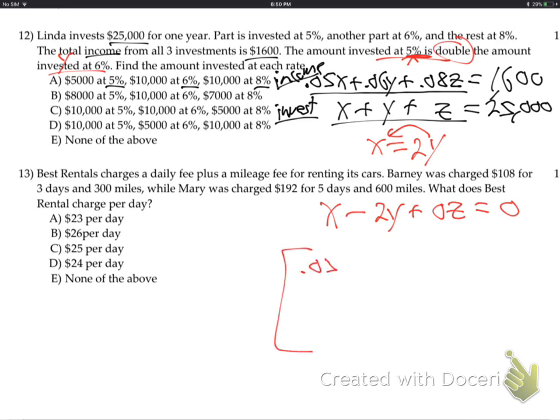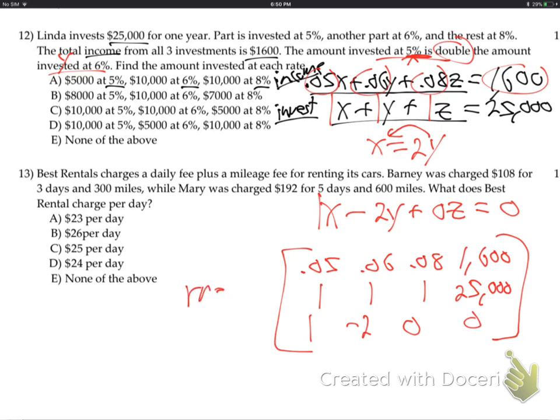So there's my matrix. So here we go, 0.05 right here, 0.06, 0.08, 1,600. And 1, 1, 1, 25,000. And then 1, minus 2, 0, 0. There's the matrix, RREF. You'll get answer D. Let's go to 13.